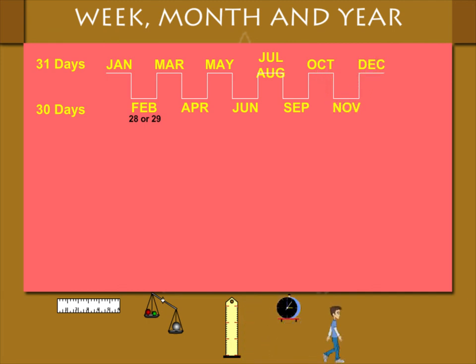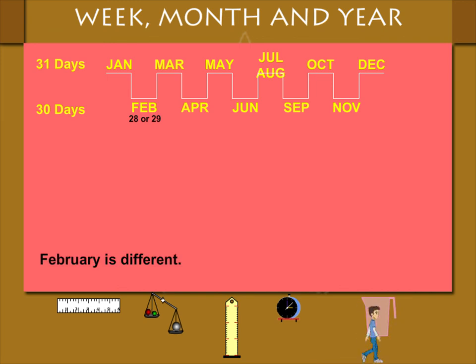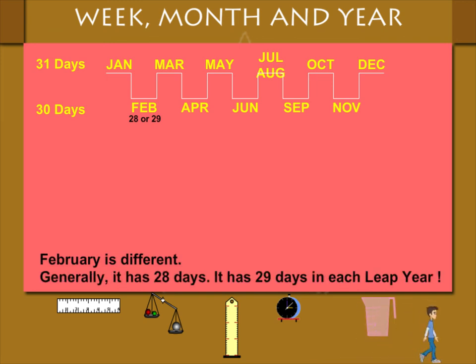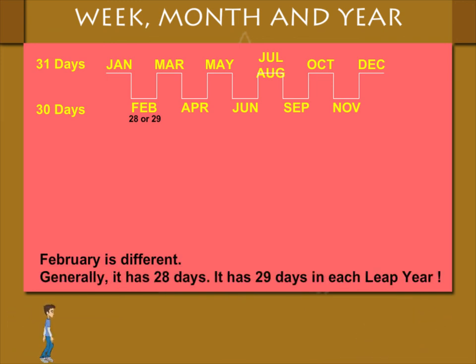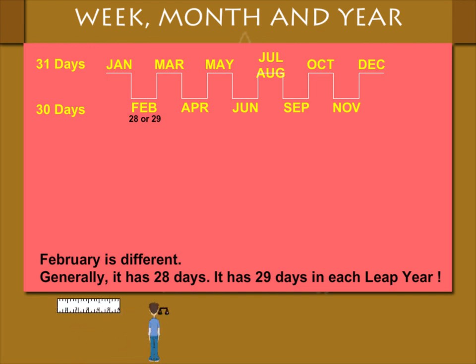November 30 and December 31. February has 28 days, but once in 4 years it has 29 days. This is called a leap year.